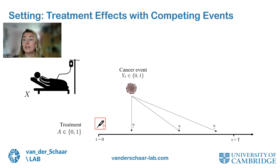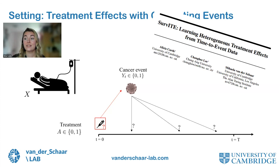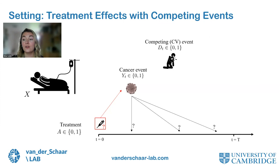In this context we're interested in the effect of a binary treatment — an intervention that can either be given or not given to a patient. If this were all, it would be a relatively simple survival analysis treatment effect estimation problem. What we're actually interested in is making it more realistic, because often in reality there's not only one event that can happen to a patient, but multiple so-called competing events.